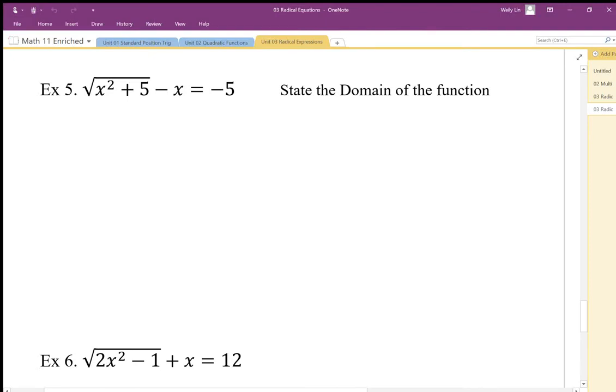Here we want to make sure we can state the domain of this. The inside restriction - it looks like there's no restriction on the inside. So x squared plus 5 is always going to be positive, so there's no domain restriction there.